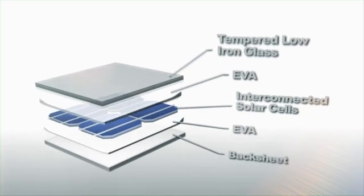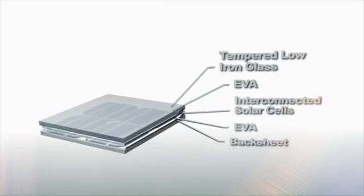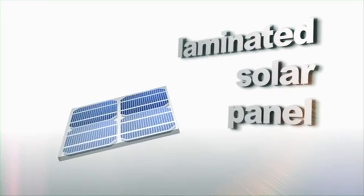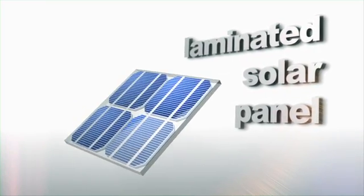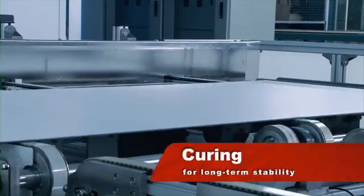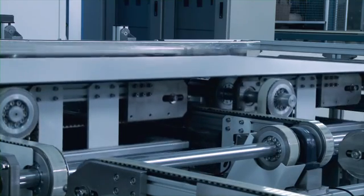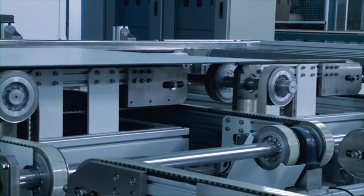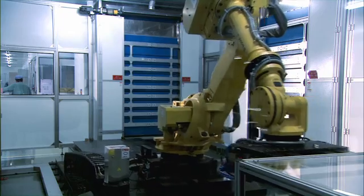This sandwich structure is laminated to protect the solar cell from moisture and mechanical shock. The laminated cells undergo a process of preheat, heating and cooling, causing cross-linking of the EVA to form a chemical bond which hermetically seals the module.